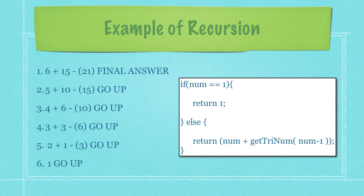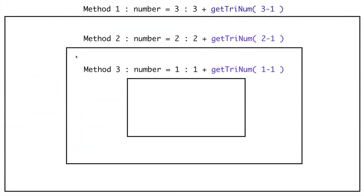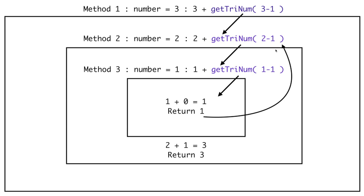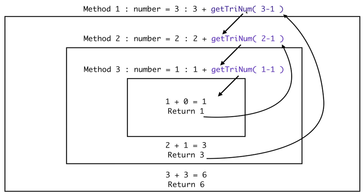Let's look at recursion using a totally different layout. Here I have three methods inside boxes — this is how recursion works. If 3 is passed into our recursive method, we don't yet know the value after the calculation, so the methods keep calling down until we get to 1 minus 1 equals 0, returning 1. Now that we have a return value, 2 plus 1 equals 3, and 3 plus 3 equals 6 — all method calls are done.